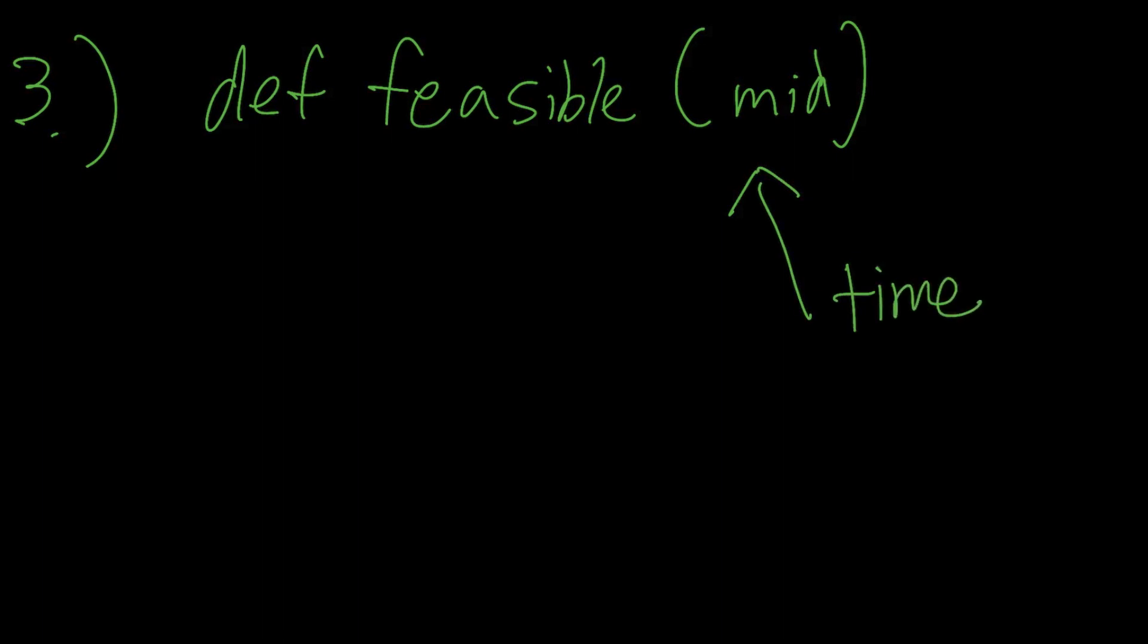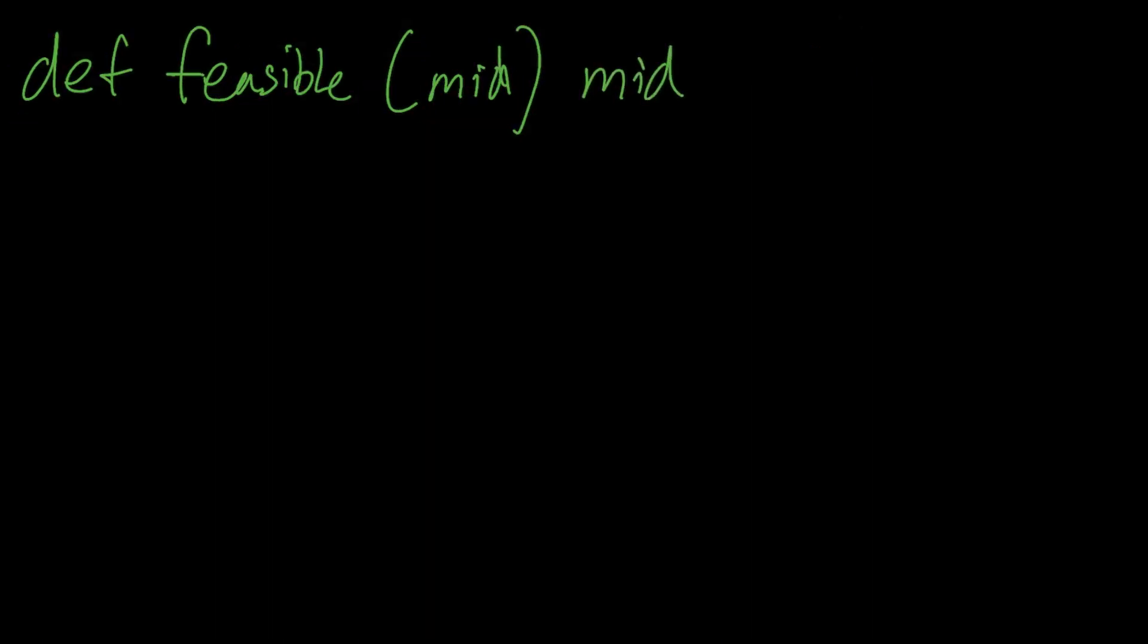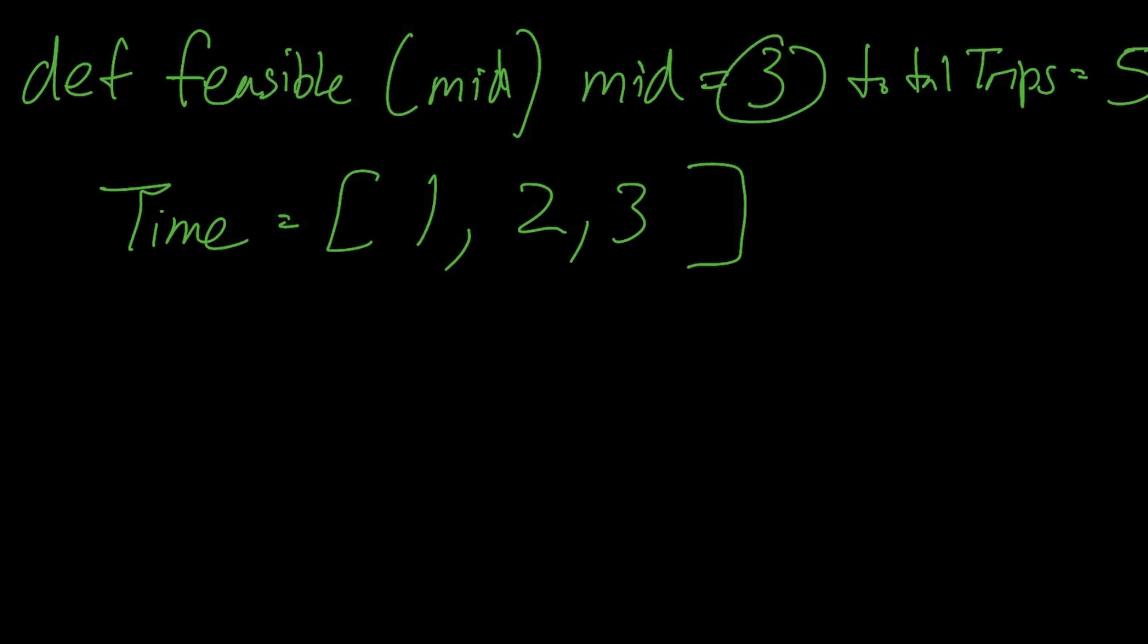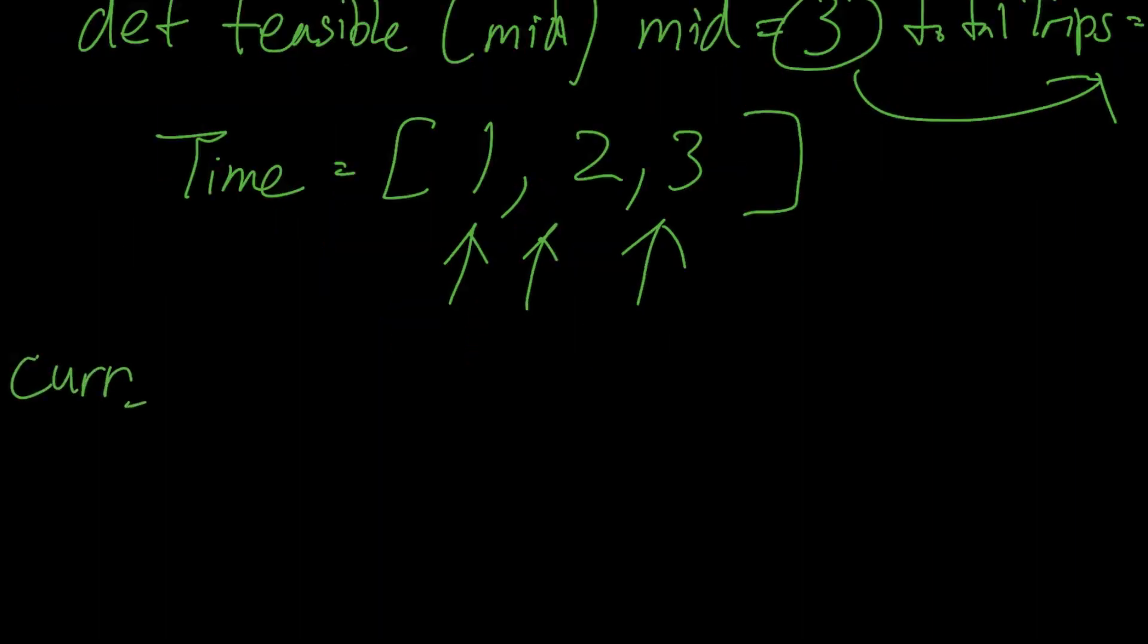So let's draw that logic out. Okay, so I'm going to create my function here. I'm going to assign an arbitrary point. At this point, I'll set the midpoint as three, and my total trips is five. I then create a hypothetical times array. In this case, it'll be just one, two, and three. So how do I check that a time of three would fulfill the total trips? I'm going to have to iterate the time array to see how many trips each bus can take in my chosen time, and then add them together in a variable I'll call actual trips and see if it meets the total trips variable.